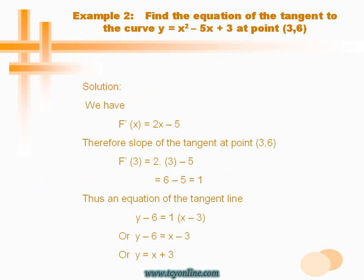Let's see an example of how to find the equation of a tangent to a given curve. Here the curve is y equals x squared minus 5x plus 3, and the point is (3, 6). Step 1: find the derivative of the given curve, which gives 2x minus 5. To find the slope of the tangent, put x equals 3 in the derivative, and you will get slope equals 1. Now put this value of slope in the point-slope form y minus y1 equals m times (x minus x1), and you will reach y equals x plus 3, which is the equation of the tangent to the given curve.